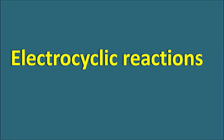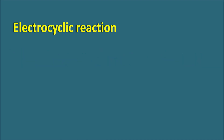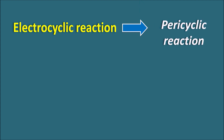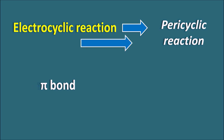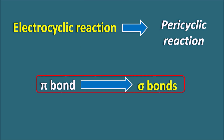Hi everyone. Today in this video let us discuss about electrocyclic reactions. What is an electrocyclic reaction? This is one type of a pericyclic reaction where the electrons are going to be transferred in a cyclic fashion from one location to another, along with the formation of a new sigma bond. Even so, many pi bonds are going to be involved in this reaction. The net effect of this reaction is the conversion of one pi bond into a new sigma bond. Such reactions where the pi bond is converted to a new sigma bond within a single molecule are called electrocyclic reactions.